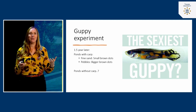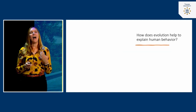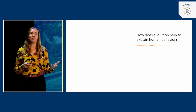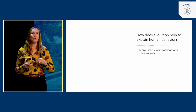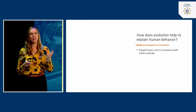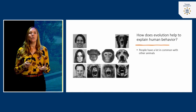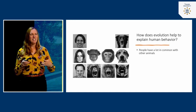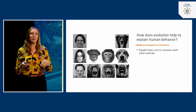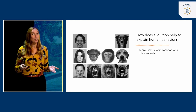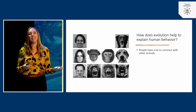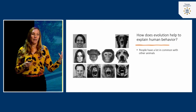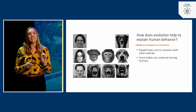This is a cool experiment showing how evolution changes guppy appearance, and it also applies to humans. We know that people actually have a lot in common with other animals, which is what evolution theory would expect. Think for example about facial expressions — as you can see on this slide — but also displays of power and status, which are basically the same for humans and other animals, especially primates.